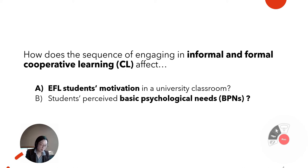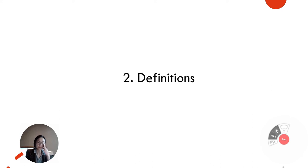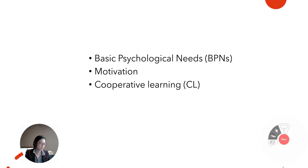Thus, I embarked on a journey to find out how the different sequence of informal and formal cooperative learning affects students' motivation. Before going any further, let me define important terminology. I would like to define the following key terms: basic psychological needs, motivation, and cooperative learning.